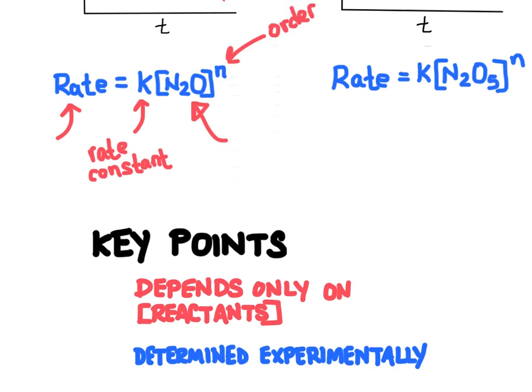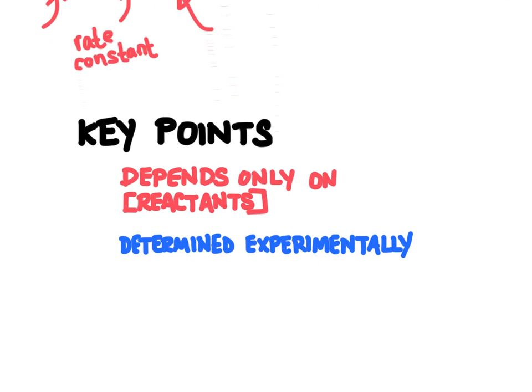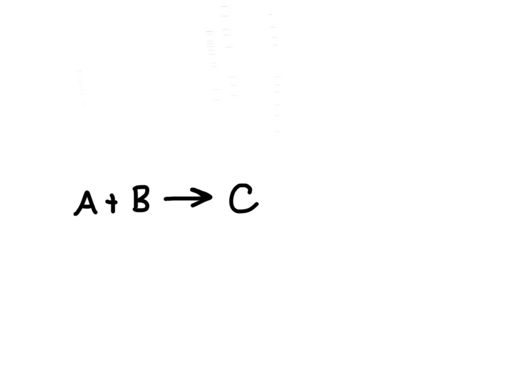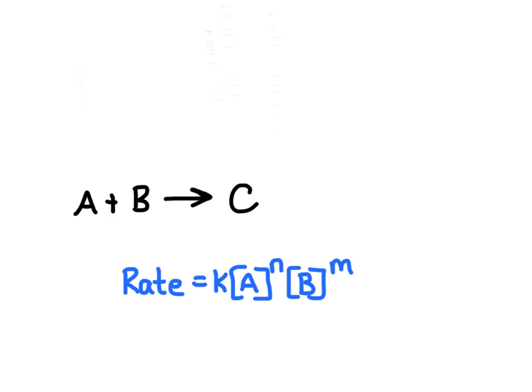A couple key things to remember: the rate law depends only on the concentration of the reactants — we never care about the products — and the order must be experimentally determined. Now what if there is more than one reactant? We would include both reactants in the rate law, and both reactants are going to affect the rate differently because they each have their own order.